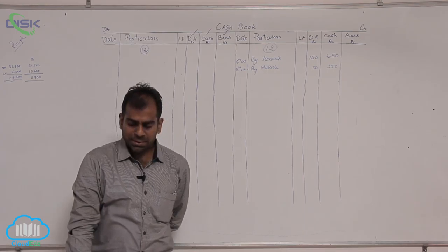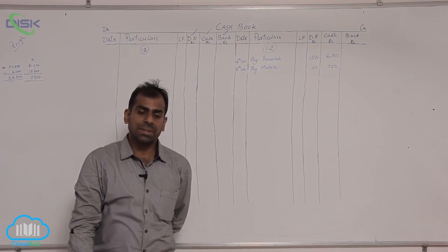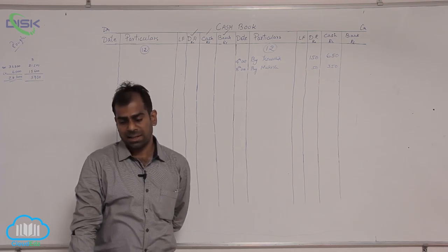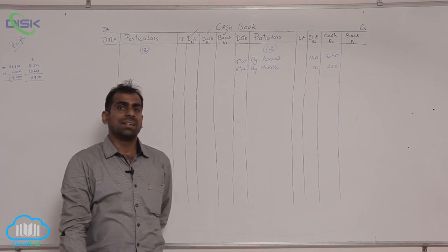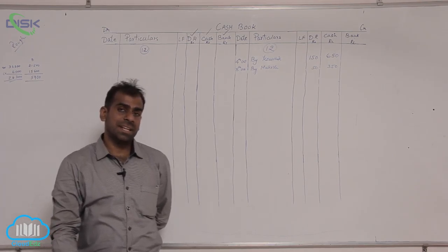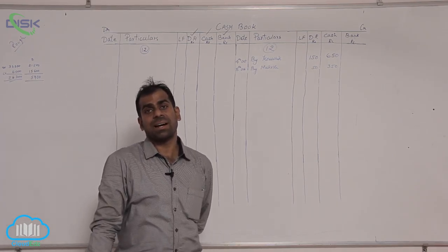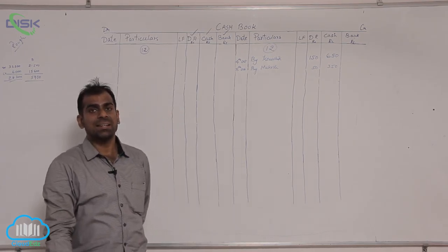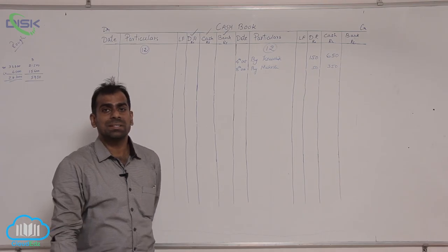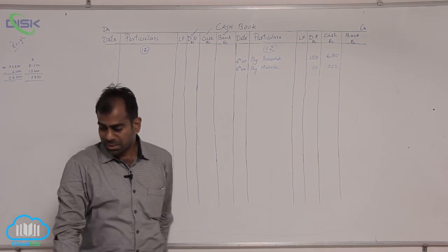Further, if you read the transaction on 14th date, it states that Prabhu's check deposited into bank. The date of receipt of check and its deposit are different. Hence, the day you receive treat it as cash, the day you deposit pass a contra entry.